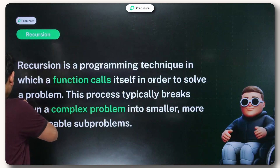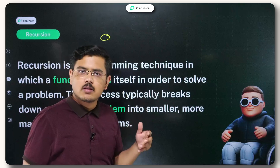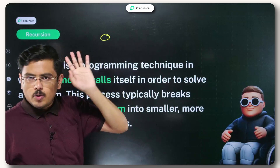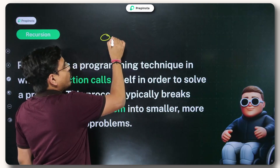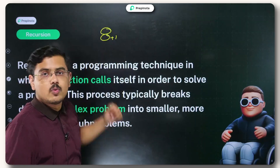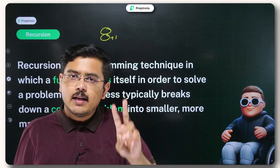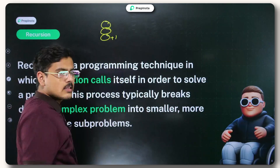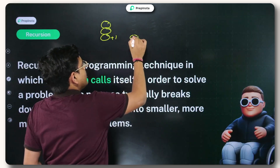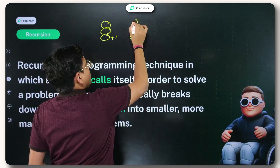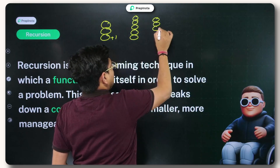Consider that you have one candy and you are trying to build a tower of candies. If you put one candy, it is a tower of one candy. Your mother told you that if you want a tower of two candies, all you need to do is add one candy above this. Then for a tower of three candies, in the tower of two candies you add one candy. Now she gave you a problem: build a tower of five candies. You know that to build a tower of five candies, you need to add one candy to the tower of four candies.